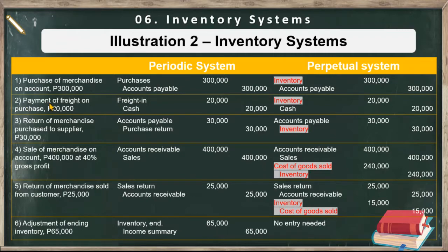For number two — payment of freight on the purchase of 20,000 — under periodic: freight in, credit cash. But on the perpetual system, instead of freight in, you're going to use inventory. Number three — return of merchandise purchased to a supplier — under periodic: debit accounts payable, credit purchase return. In the perpetual system, instead of using purchase return, we're going to credit inventory.